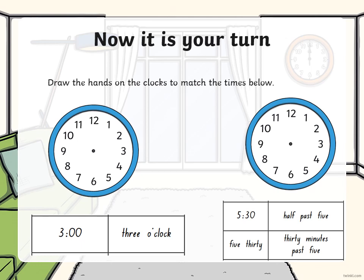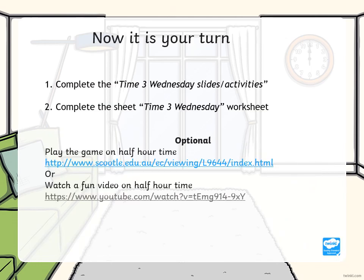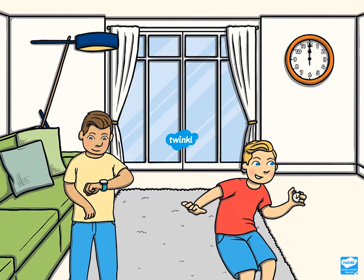Now it is your turn. Draw the hands on the clocks to match the times below. You need to go and complete the Time 3 Wednesday slides and activities that we've just gone through, and then complete the Time 3 Wednesday Worksheet. Once you've done that, if you'd like to, you can choose one of the optional games and play a game about half hour time, or you can watch a fun video on half hour time. Well done, everyone — I hope you enjoyed those activities and did well with them.